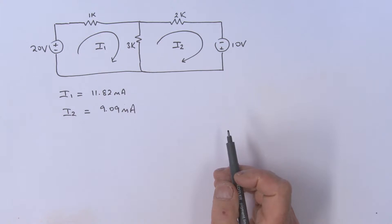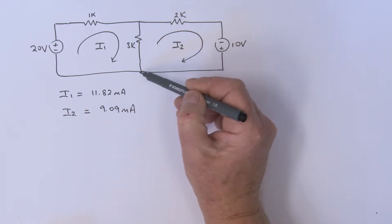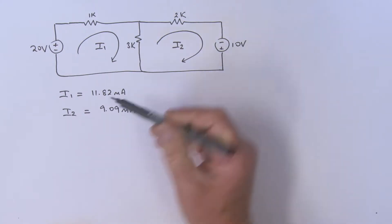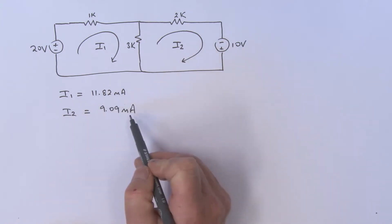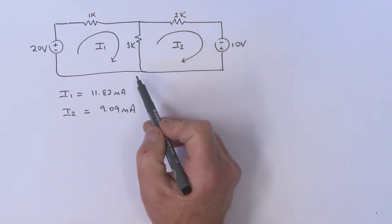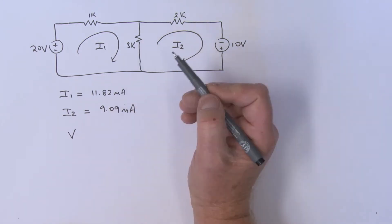Hello again. What I wanted to do is revisit finding the voltage across that 3k resistor. As you remember from last time, we worked out the I1 current and the I2 current. So what we can say here is the voltage across that 3k resistor—